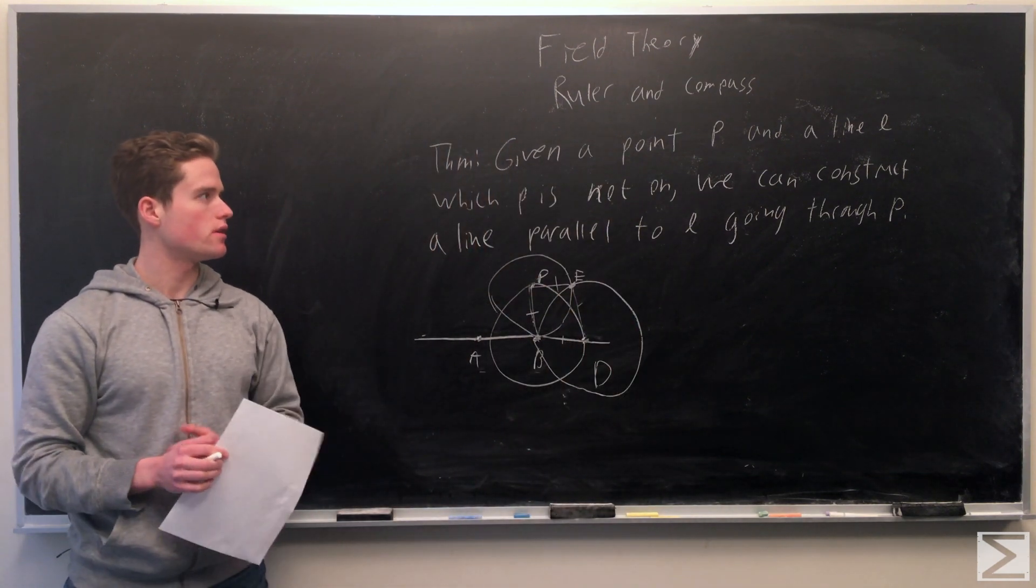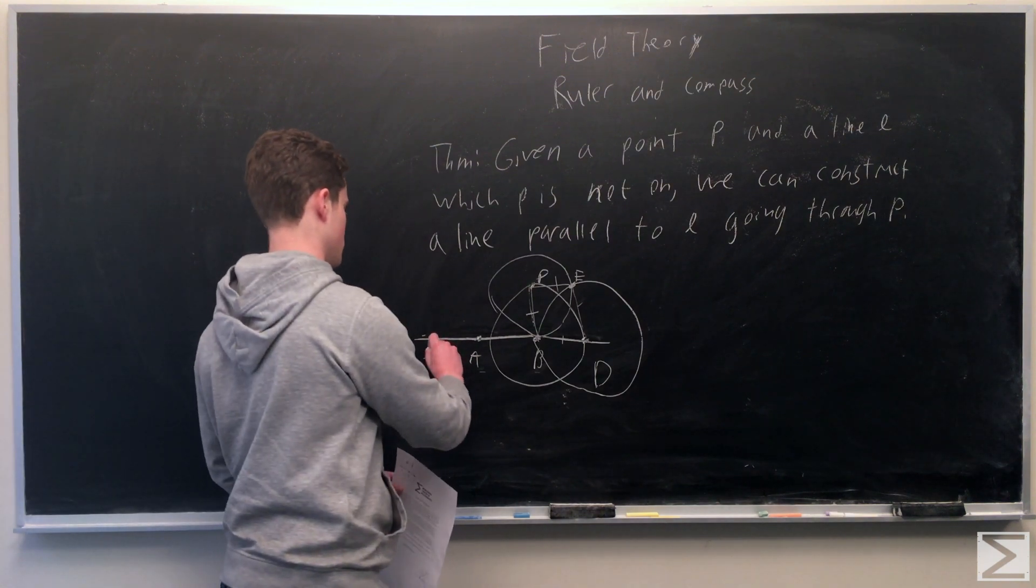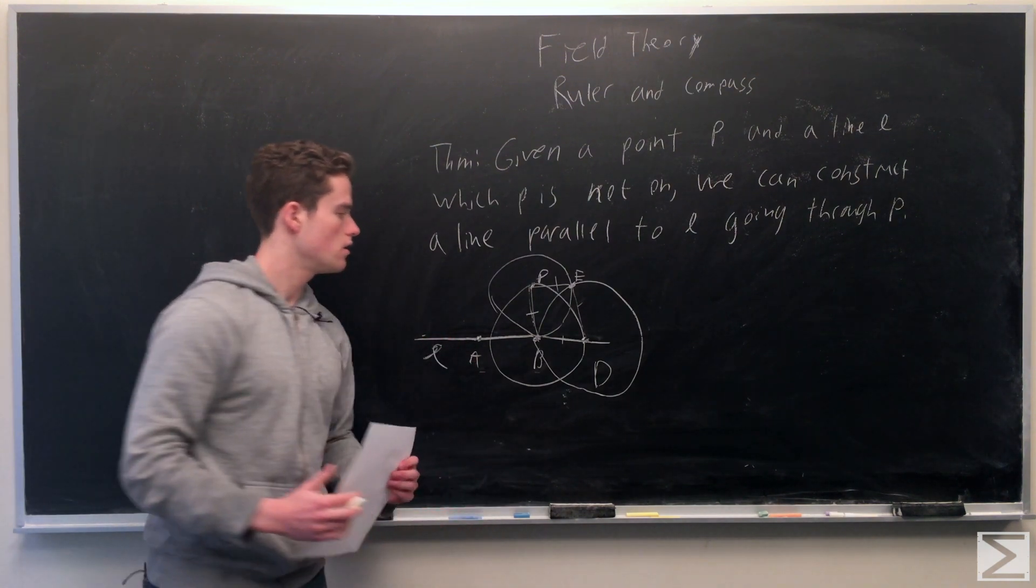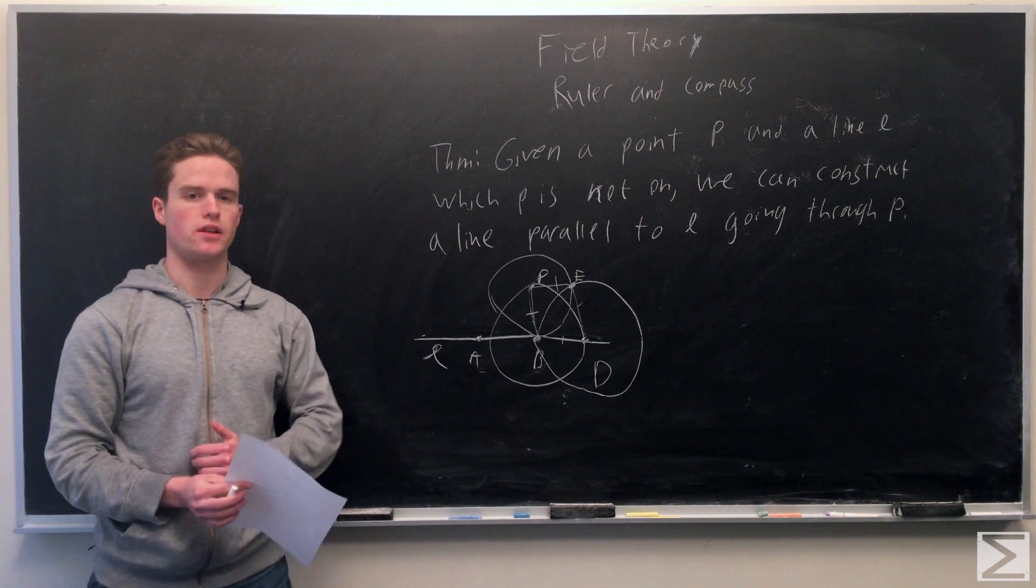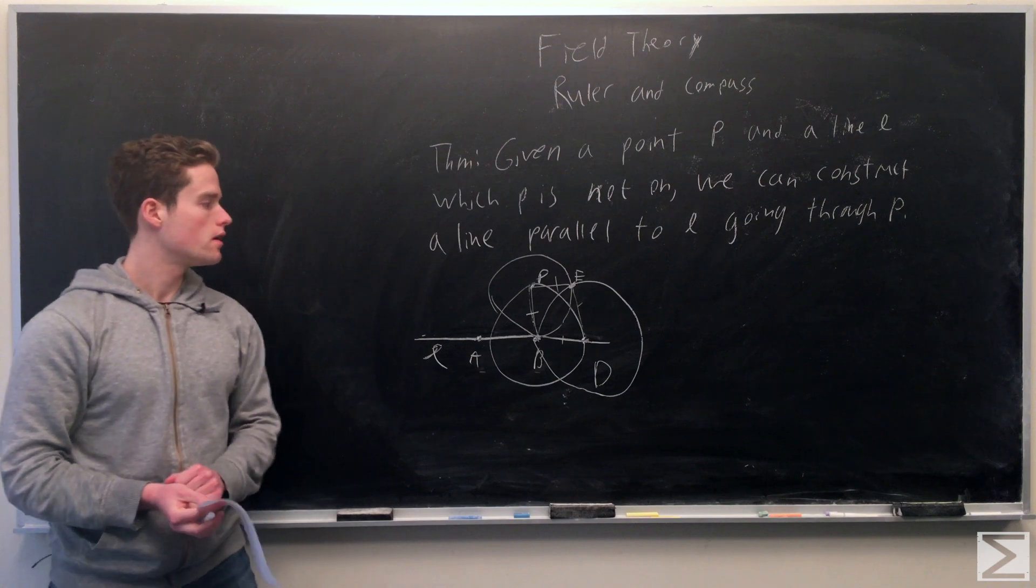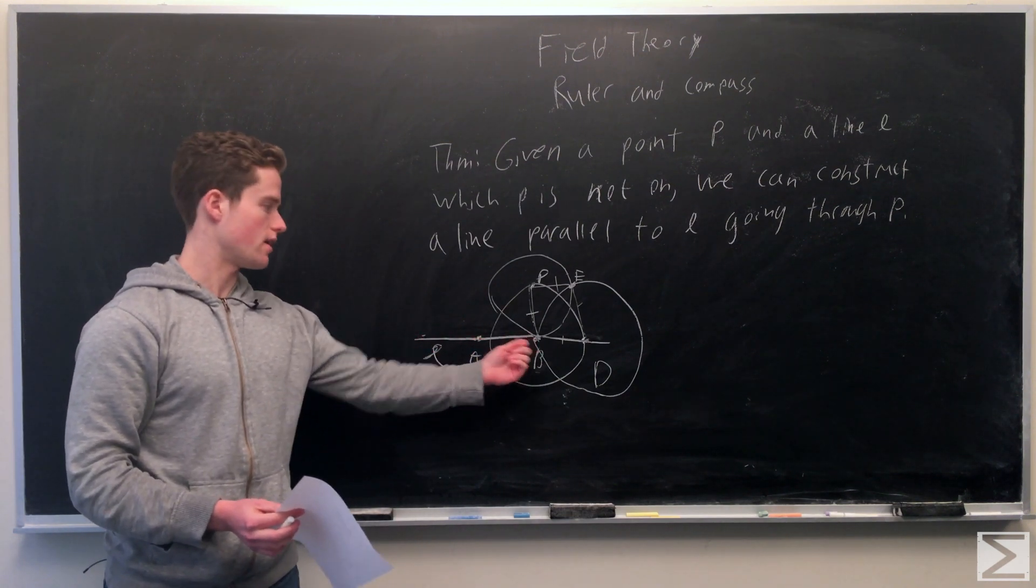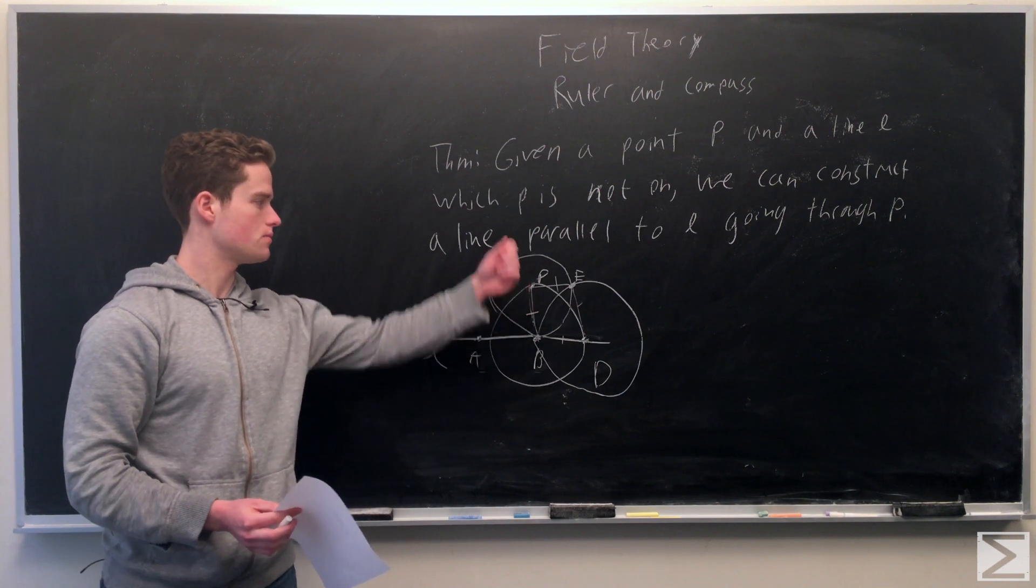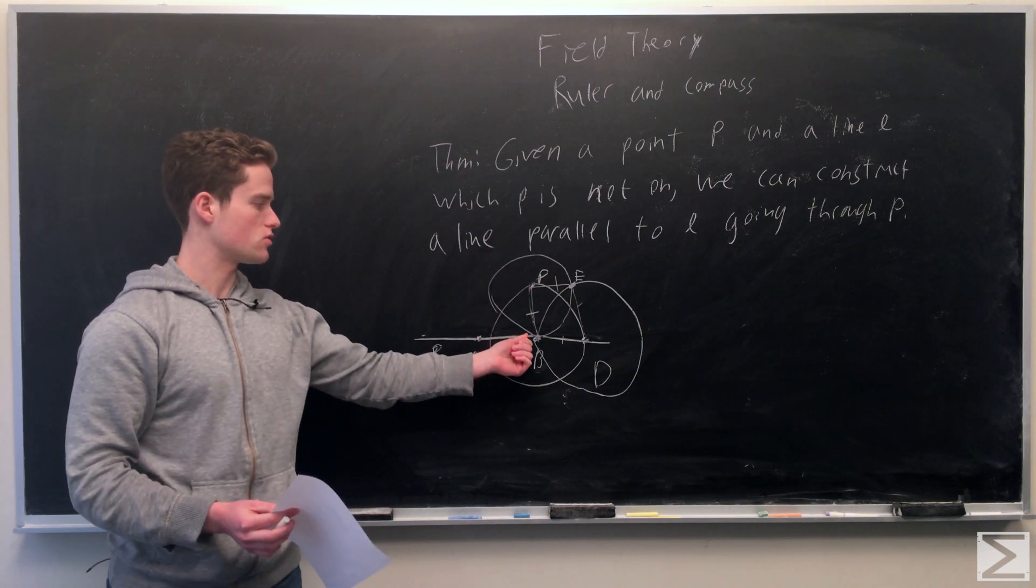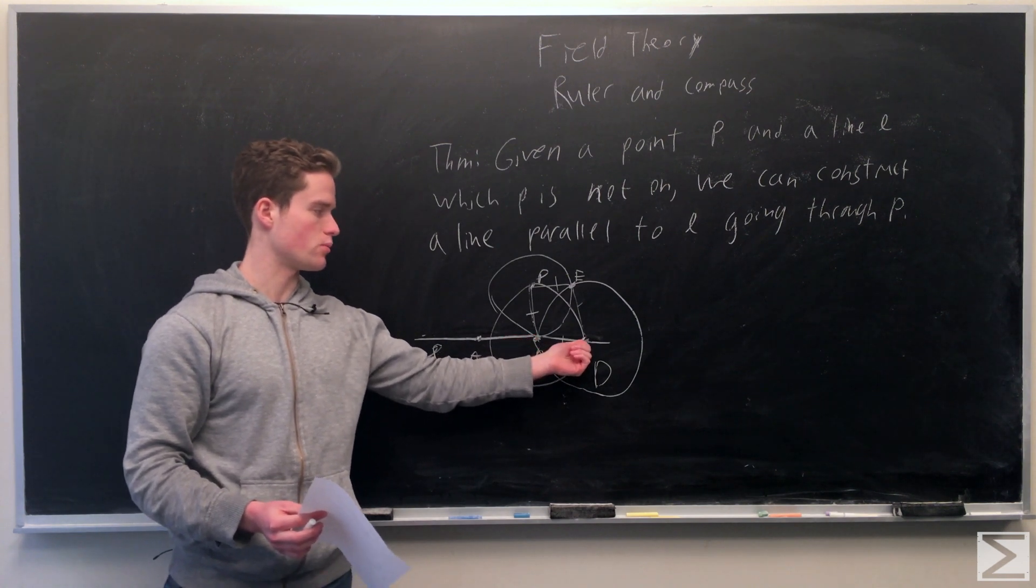We can show given a point P and a line L, where the point P is not on the line L, we can construct another line going through P that's parallel to the line L. Say we have some line L determined by two points A, B. We have another point P. First, we're going to draw a circle radius PB centered at B, and it'll intersect L at some point D.